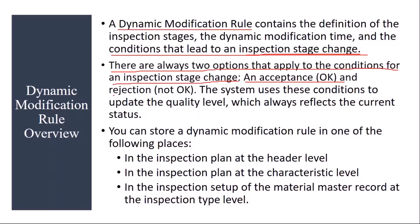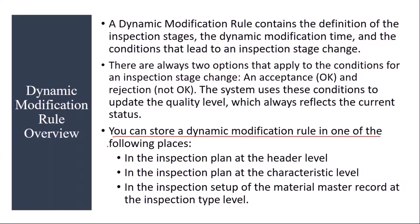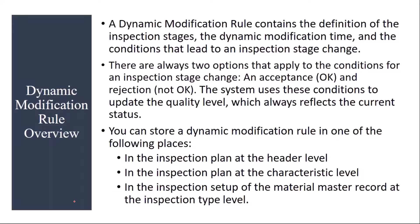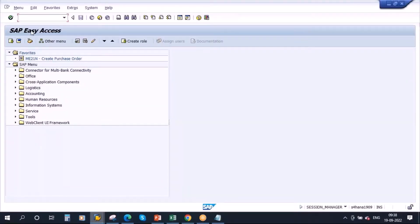There are always two options that apply to the conditions for an inspection stage change: one is acceptance and one is rejection. If the previous inspection lots are accepted, there will be an inspection stage change; likewise if they are rejected. The system uses these conditions to update the quality level, which always reflects the current status. You can store a dynamic modification rule in one of three places: in the inspection plan at header level, at the characteristic level, or in the inspection setup of the material master record at the inspection type level.